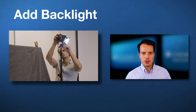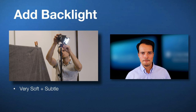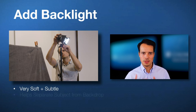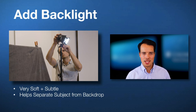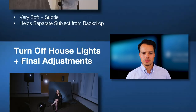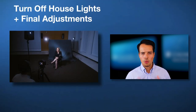Then we're adding in our backlight. The point of this light, which is a very soft and subtle light, is to just add some separation between the subject and the background. Oftentimes you might not even notice it in a shot, but it is doing something by separating those two elements.